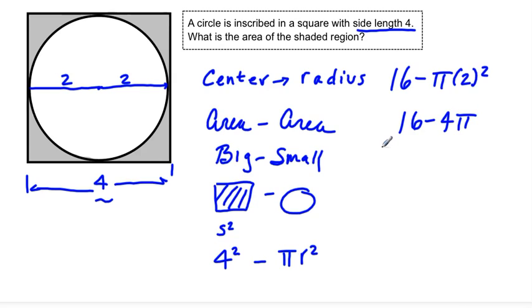The area of the square is 16. The area of the circle is 4π. The area of the shaded region is 16 minus 4π.